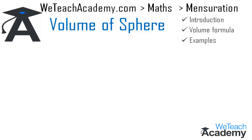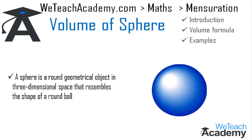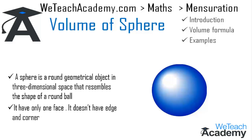A sphere is a round geometrical object in three-dimensional space that resembles the shape of a round ball. In the figure you can observe an object which resembles the shape of a round ball — this object is called a sphere. It has only one face and it doesn't have any edge or corner.